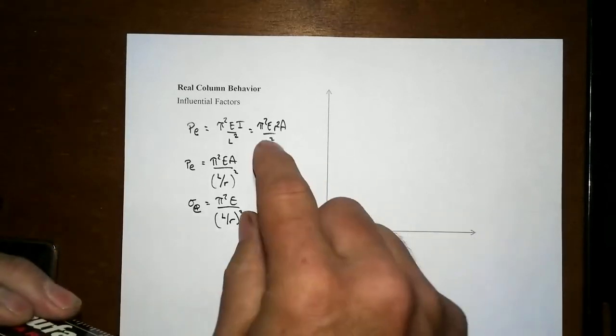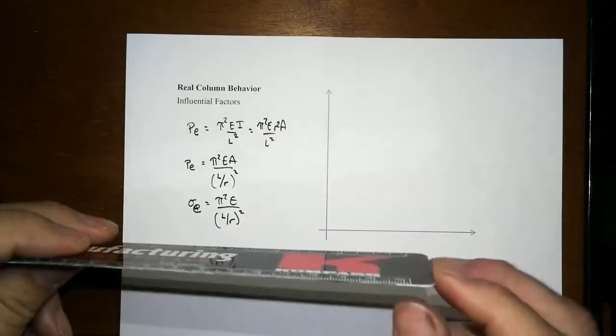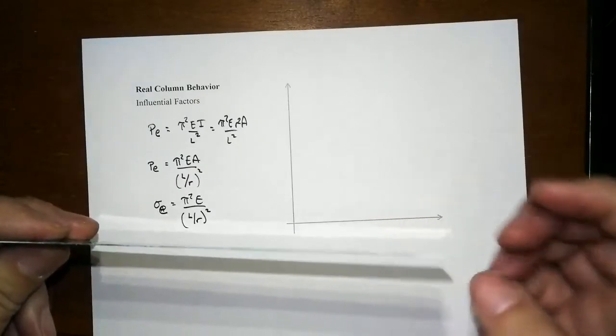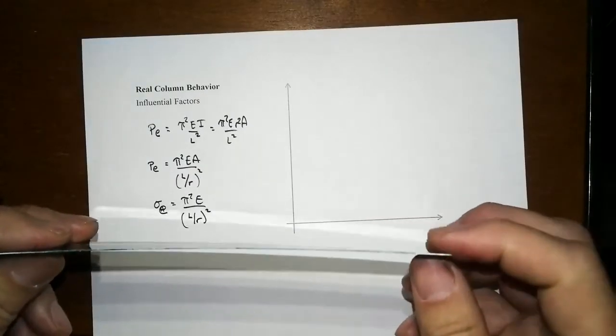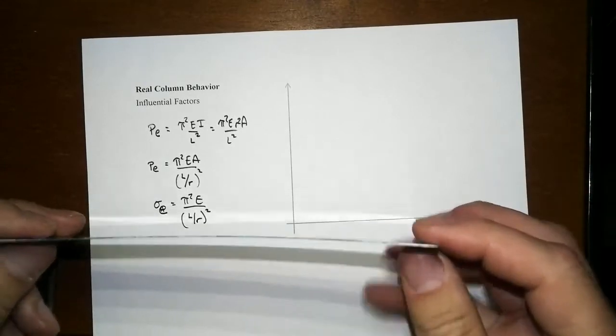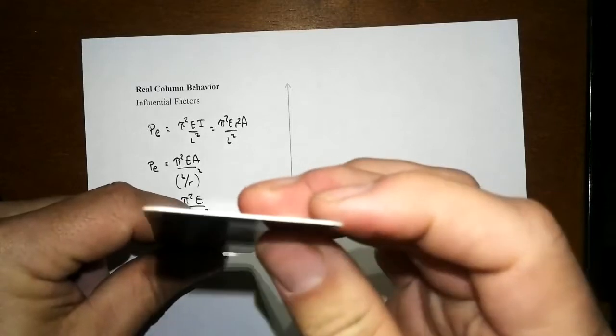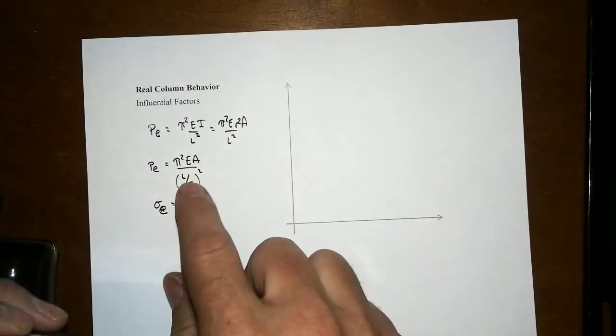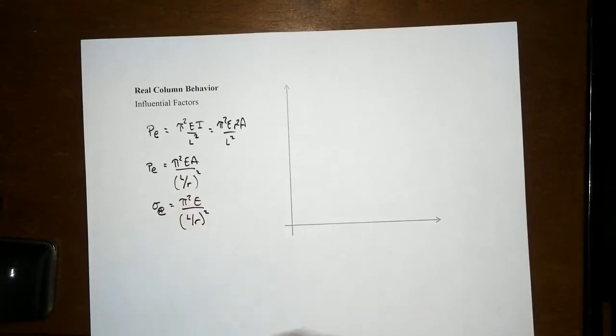We find that it's the radius of gyration that matters, not the out-to-out dimension. The out-to-out dimension gives some indication of the radius of gyration, but what do you do when you have a more complex cross-section? We like to think about it in terms of the slenderness ratio, L over R.